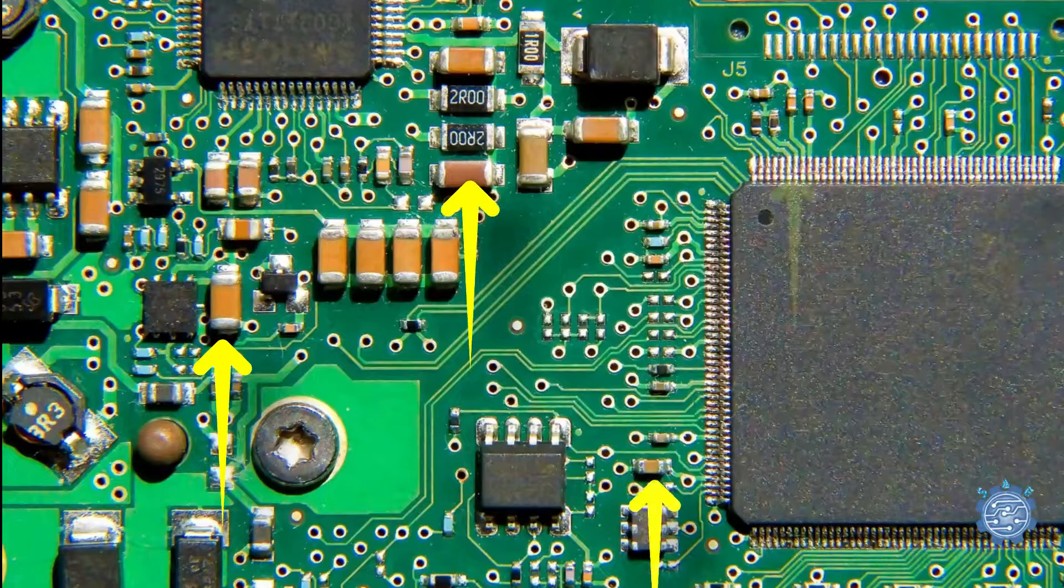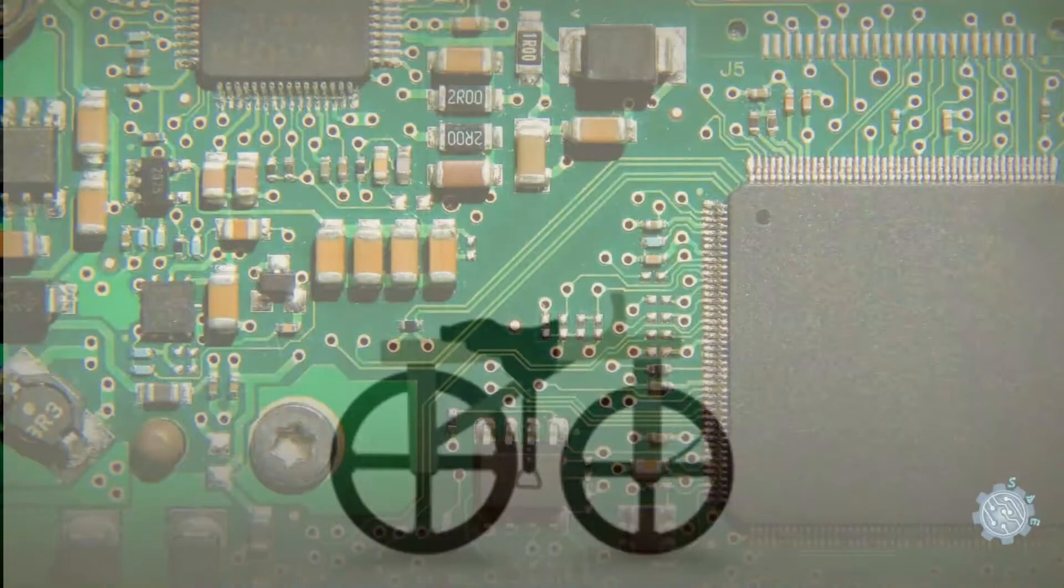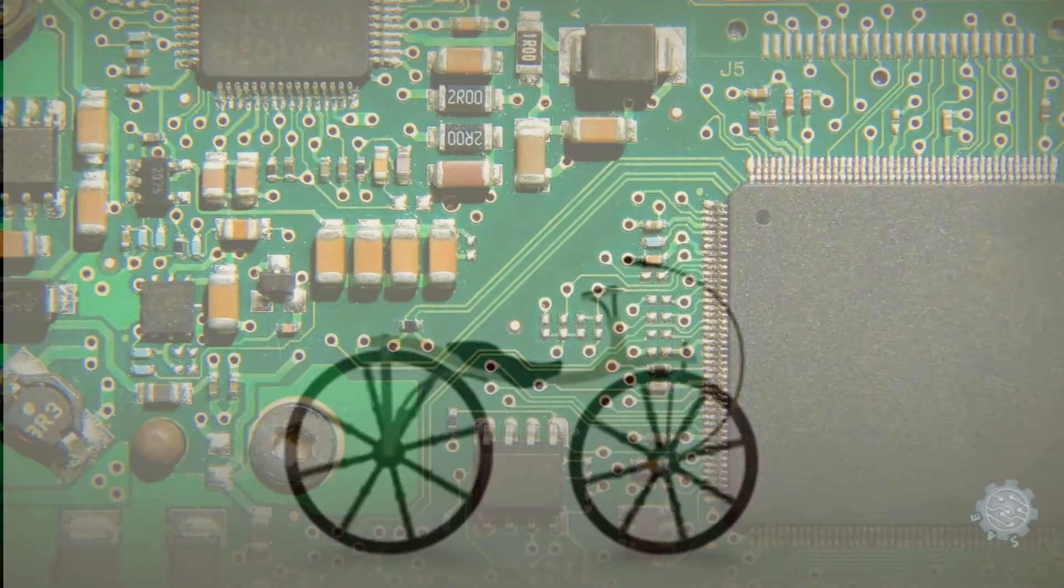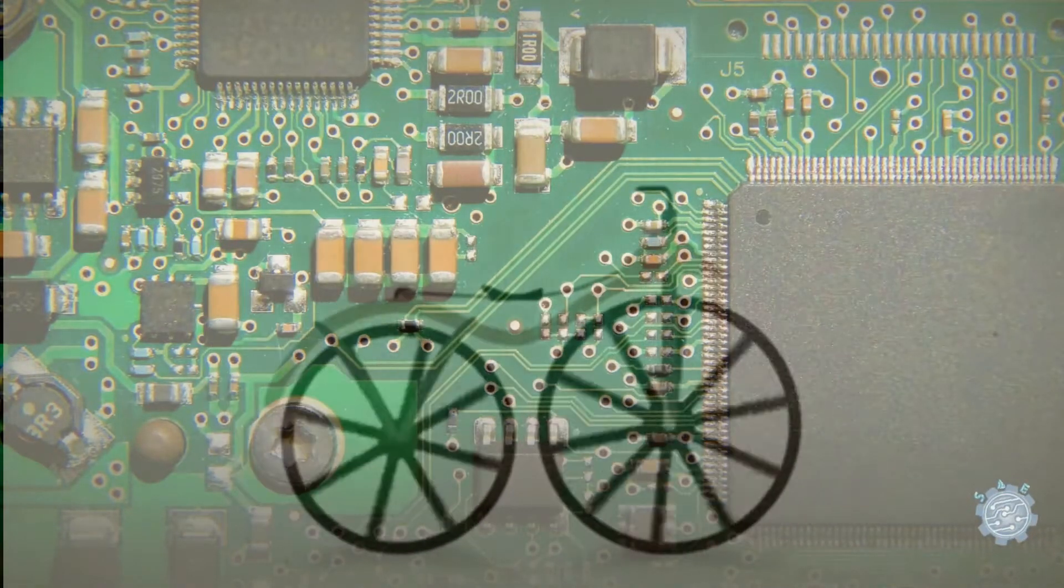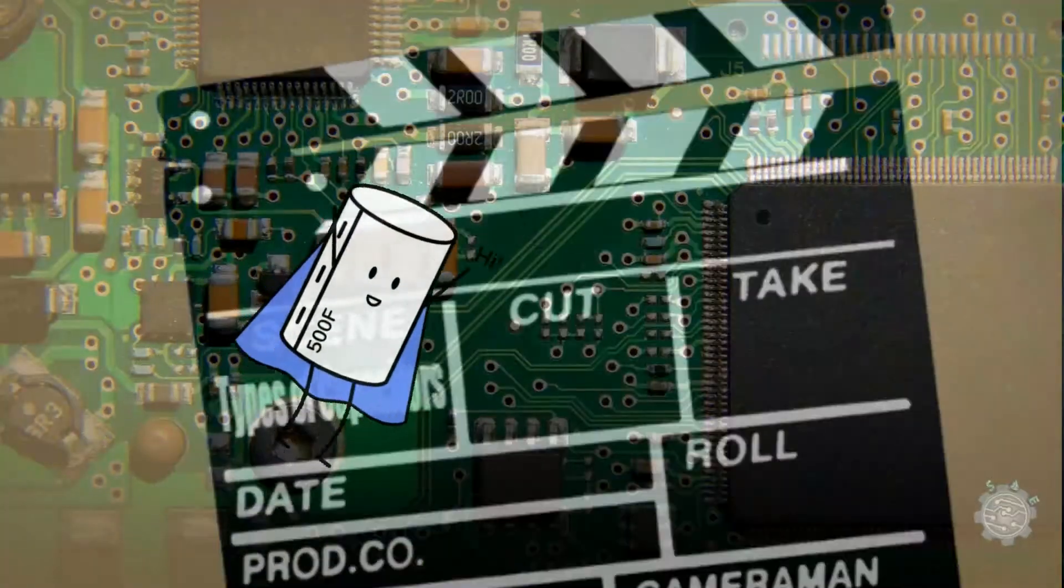But why do they have so many different sizes and forms? That's because there are many types of capacitors with various properties and qualities. Let's see the most important types of capacitors.